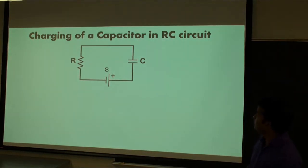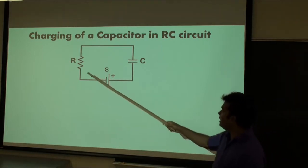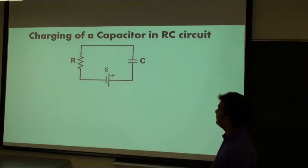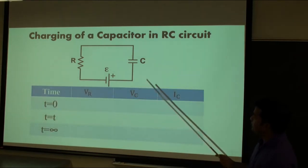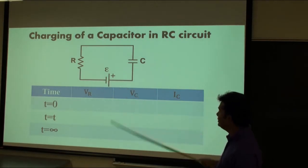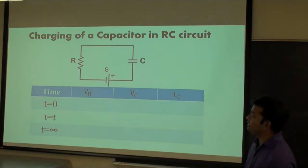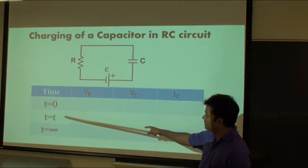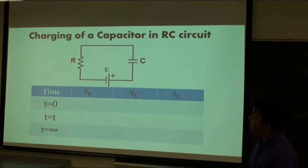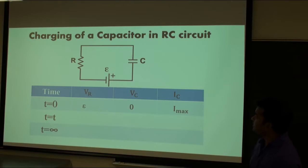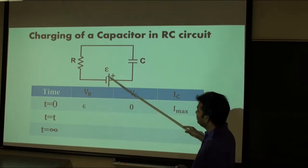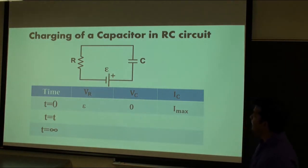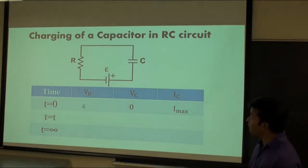Let us consider an RC circuit. An RC circuit has one resistor R, one capacitor C, and a battery. The capacitor will be charged through the resistor if we connect this circuit. We consider three different times: T equals zero, just after the circuit was constructed; some intermediate time T equals T; and after long time T equals infinity. When T equals zero, the voltage across the resistor will be equal to the voltage across the battery, because initially the capacitor has no charge. So Q equals zero, then the voltage will also be zero.